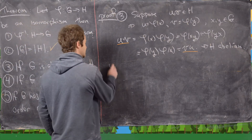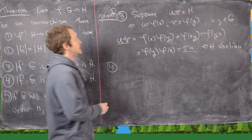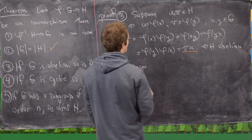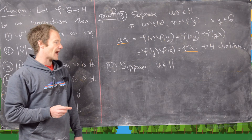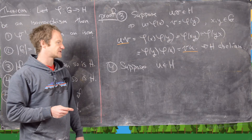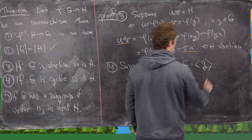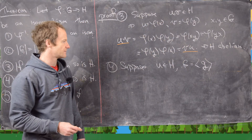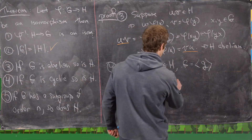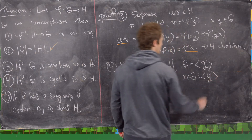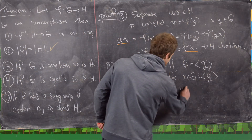Now let's look at part four: H is cyclic when G is cyclic. Suppose U is any element of H. We want to show U can be written as some power of a given element from H. Since G is cyclic, we can write G as the cyclic subgroup generated by some generator g. So any X in G satisfies X equals g to the n for some integer n, and we can write U equals phi(X) for X in G since phi is onto.